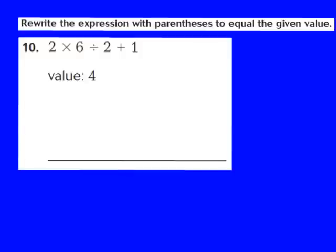Following the order of operations, there are no parentheses given, so I move to step 2: multiply or divide from left to right. I have multiplication and division, so I do multiplication first. I multiply 2 times 6, which gives me 12. Then I bring down the rest: 12 divided by 2 plus 1. Dividing 12 by 2 gives me 6. The only operation left is addition: 6 plus 1 gives me 7.